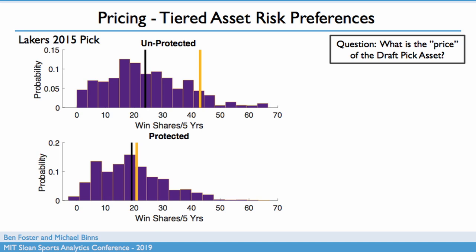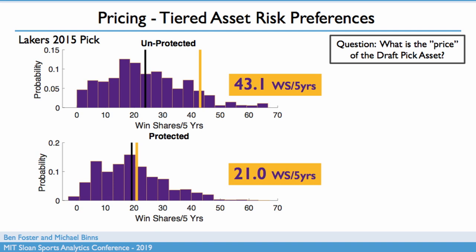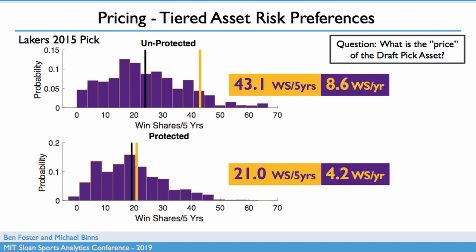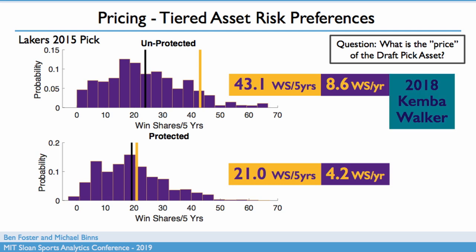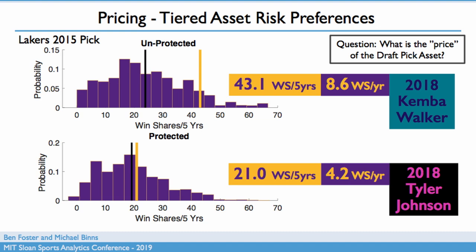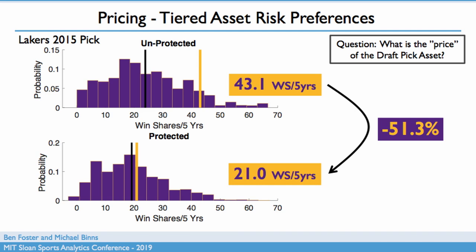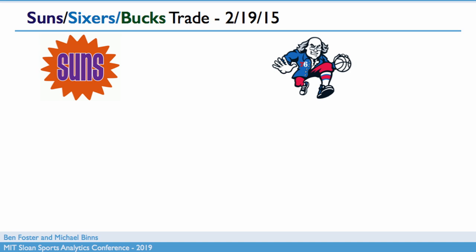Putting this into the Wang Transform model, the unprotected case shows the yellow line way out to the right — that tail pulled the price significantly. The protected case is relatively close to the expected value. Our prices are 43.1 win shares per five years for the unprotected pick and 21.0 for the protected pick. Breaking that into implied annual win share contribution: 8.6 per year in the unprotected case corresponds roughly to 2018 Kemba Walker; in the protected case, it corresponds to 2018 Tyler Johnson. The protection subtracted about 51% of the value of that base draft pick.